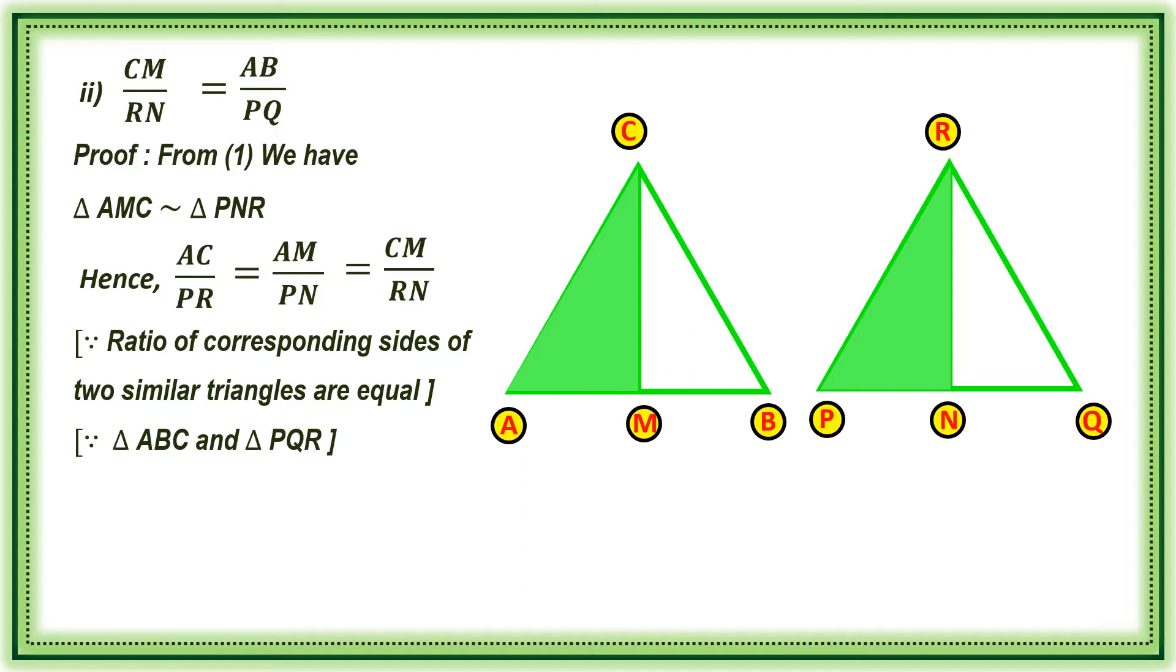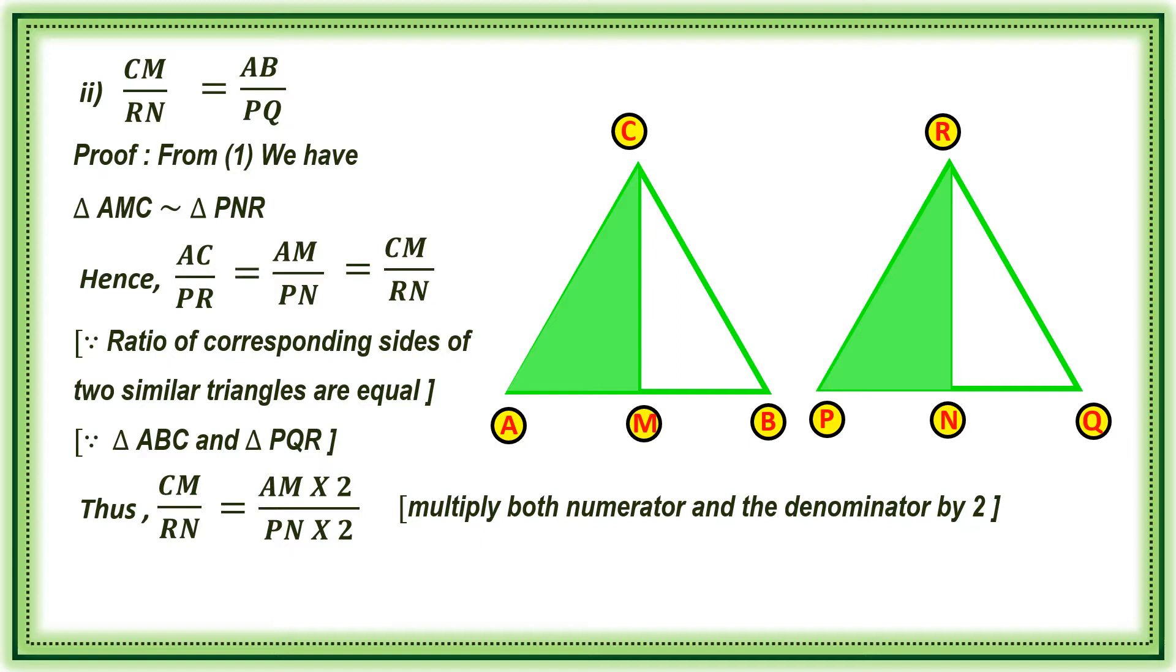Since triangle ABC and triangle PQR, thus CM by RN is equal to, if you multiply AM by 2 and PN by 2, that is, multiply both numerator and denominator by 2, CM by RN is equal to AB by PQ. If you multiply AM by 2, double of AM is AB. Similarly, PN double is PQ. 2AM is equal to AB, 2PN is equal to PQ.